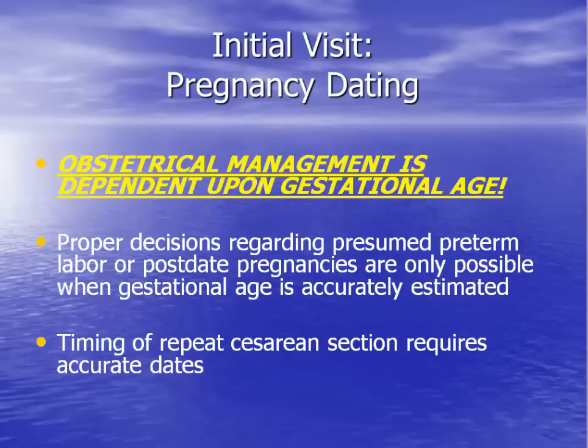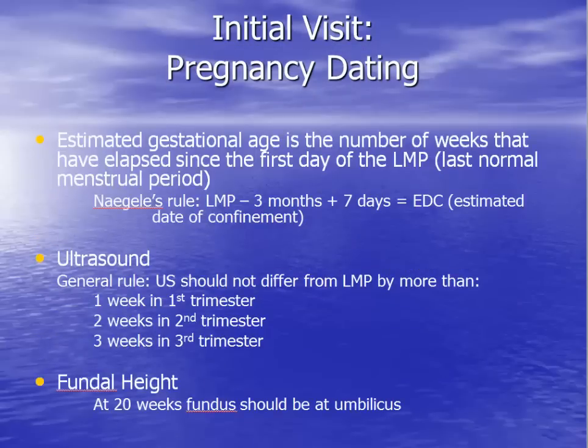One of the most important purposes for the initial prenatal visit is to establish correct pregnancy dating. All future management decisions depend on the gestational age of the fetus. The due date is 40 weeks from the last menstrual period. You should know how to use Nagele's rule to calculate the due date, referred to as the EDC, from the last menstrual period. If the patient's last period began on April 1, you subtract 3 months and add 7 days — in this case, it equals January 8.